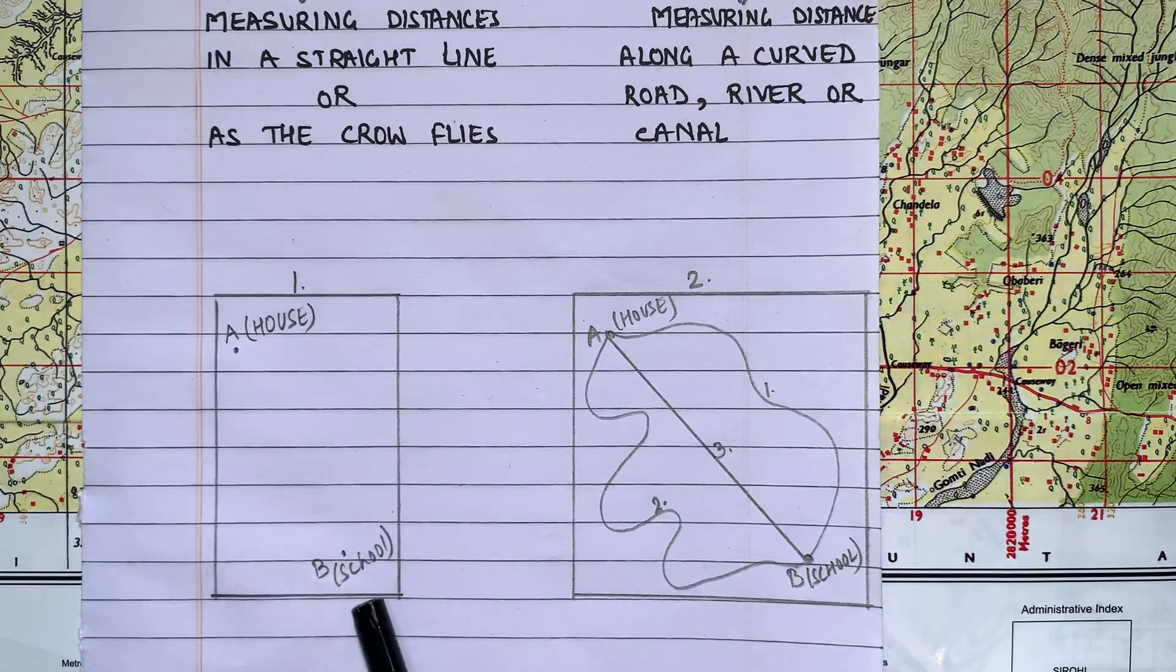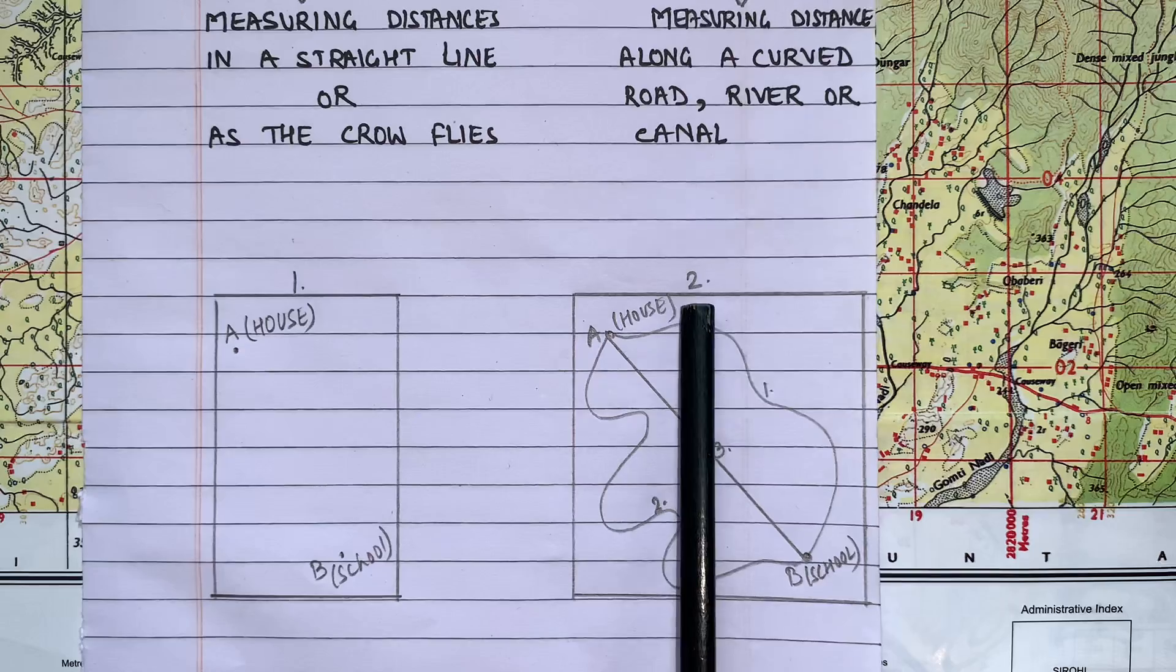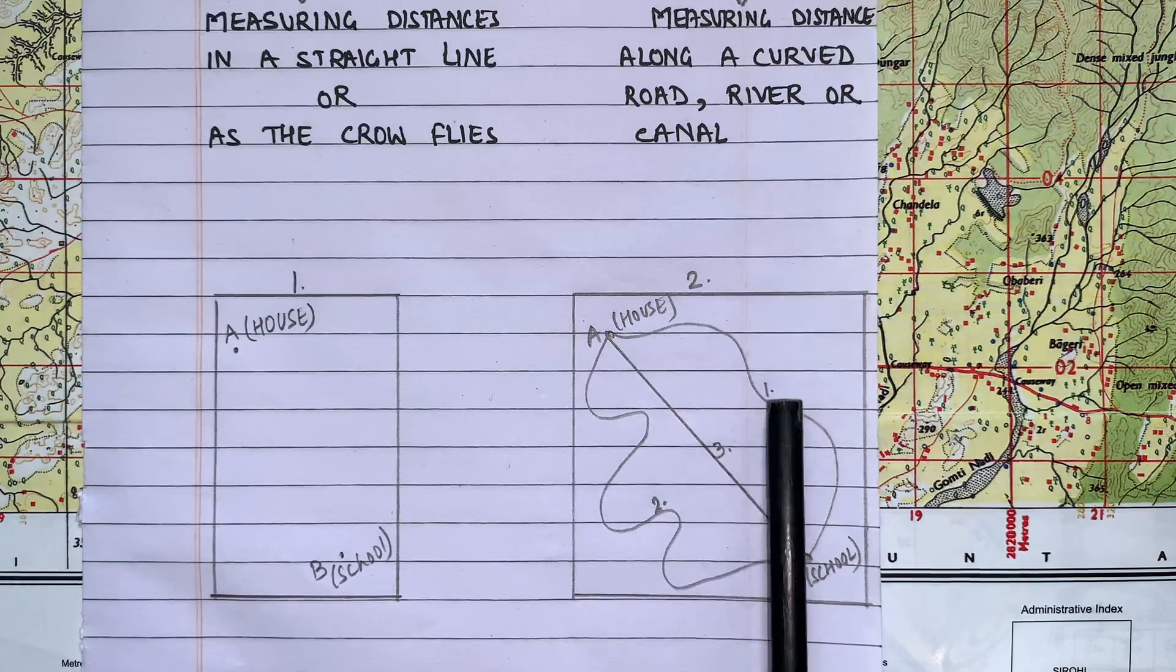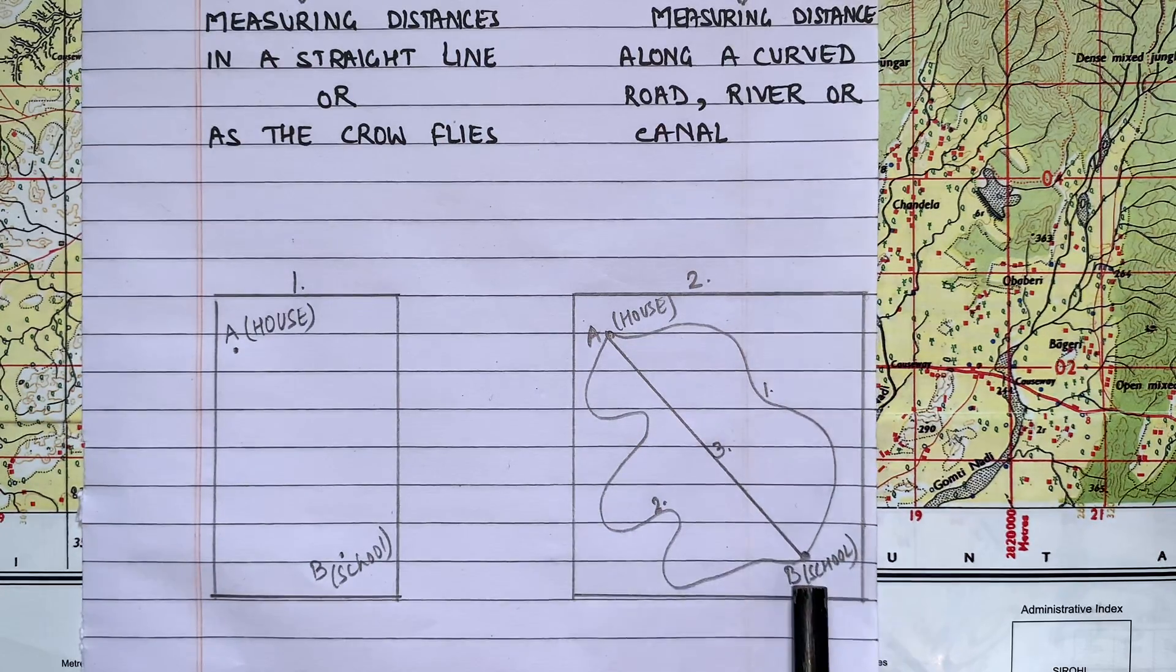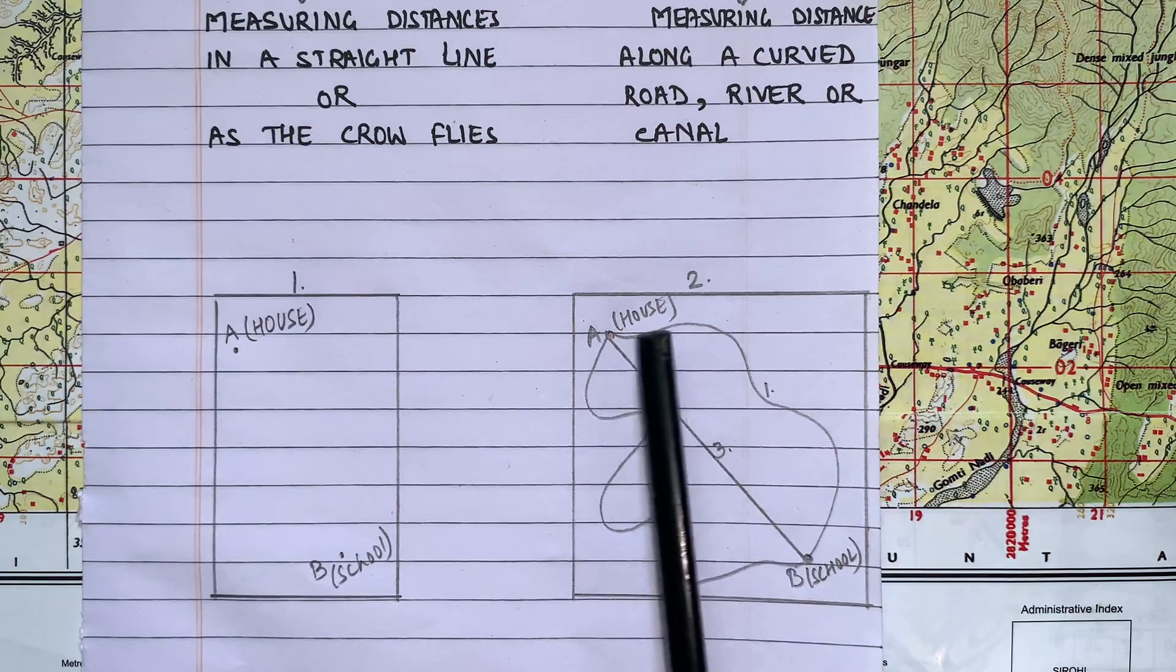In box number one I have given two points. One is A, your house, another one is B, your school. Every day you have to cover this distance to reach school. In second box I have shown three different routes that will take you to the school.